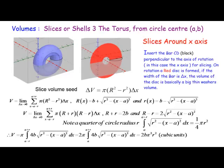Since it's a slice, we use the slice seed: δV = π(R² − r²) δx. We're moving along the X-axis from x = A − R up to x = A + R. We've already done the calculation of big R plus little r and big R minus little r, and we're going to use those now.